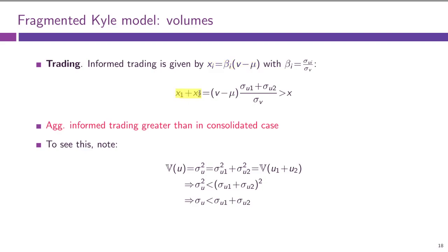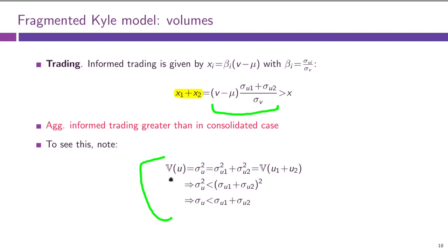If we take the total trading volumes in the two markets and sum them together, we get: V minus mu times the sum of sigma_U_i divided by sigma_V. We need to compare this to the order size in the consolidated market, which is V minus mu times sigma_U divided by sigma_V. So we need to find out if the sum of sigma_U_i is greater or smaller than sigma_U, the joint order size of the uninformed traders. The total U in the consolidated market is equal to U1 plus U2 — that is just what we assumed.